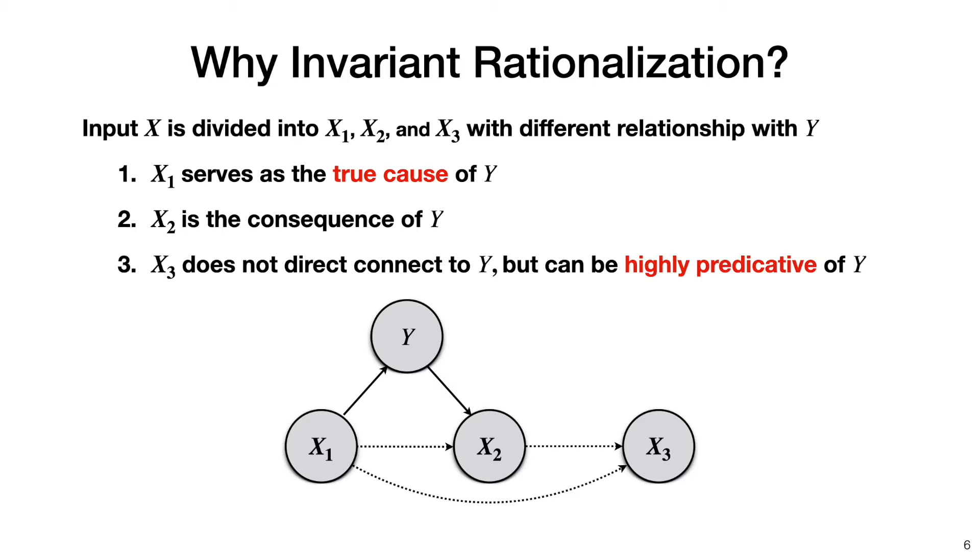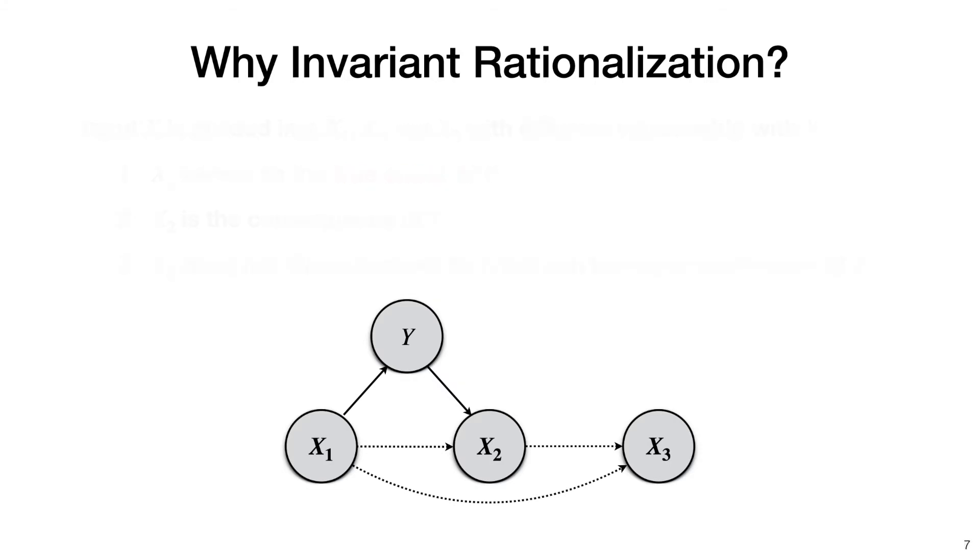With this graph, we are able to formally analyze why MMI is problematic. Consider an example where all the variables are binary. Define the probability distributions as follows. The prior of x1 is uniform. Then p of y given x1 is set to 0.9 if y takes the same value as x1.